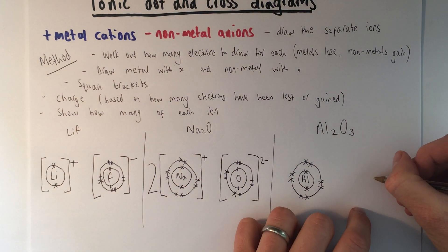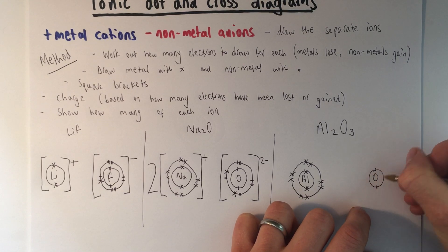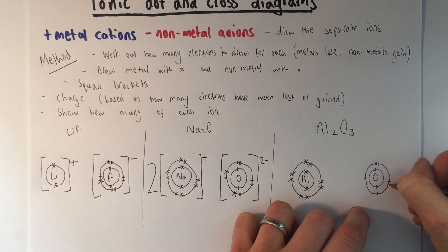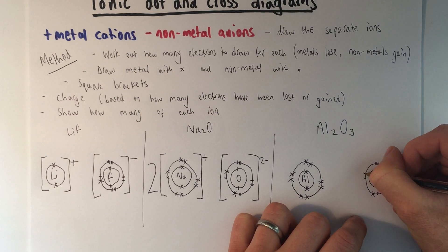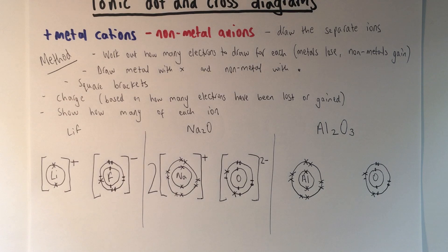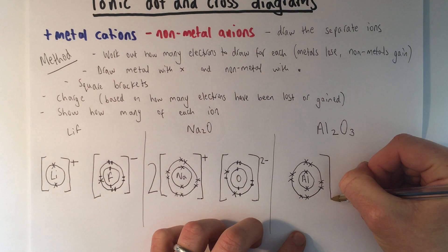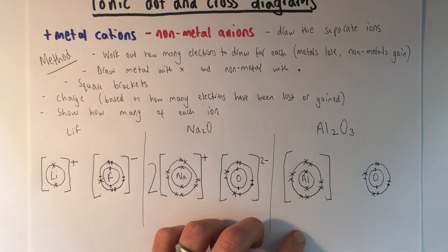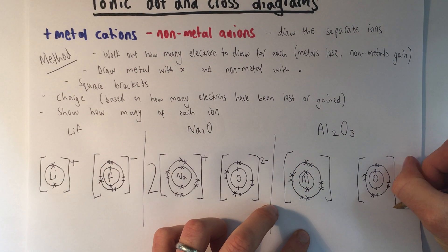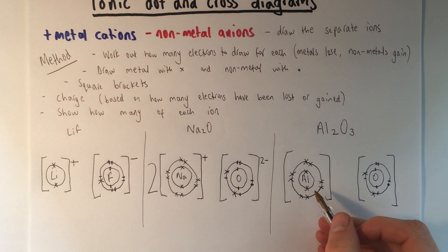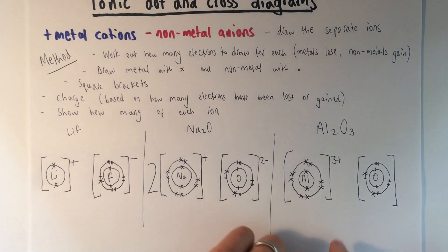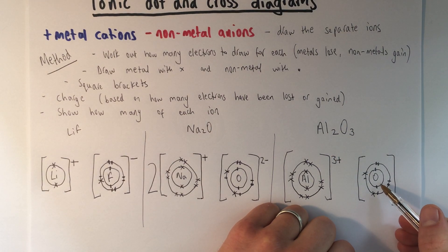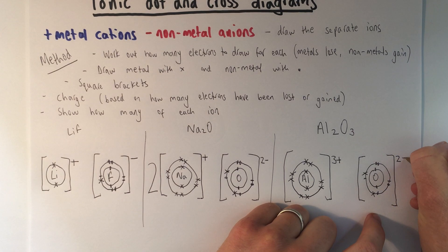The oxide ion, just like the last time, has its original eight electrons: two in the first shell and then six in the next shell. Then to take it up to the full outer shell of ten electrons, the last two are shown as crosses to indicate they were gained. Square brackets to show they're charged. Aluminium lost three electrons, so it's three plus. The oxide gains two electrons, so it's two minus.